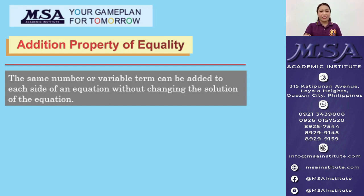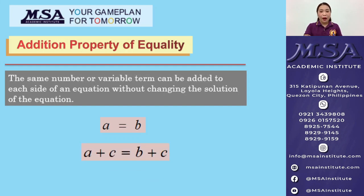So, let's say we have A is equal to B. If I add a certain number C to A, then I will also add it to B. So, we have A plus C is equal to B plus C.